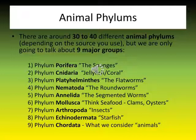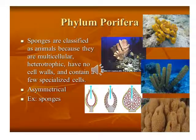We are going to discuss Phylum Porifera, which means 'pore bearer.' These are the simplest animals and cannot move. As you can see in the pictures, they are sponges, and you can observe that they have holes or pores in them.